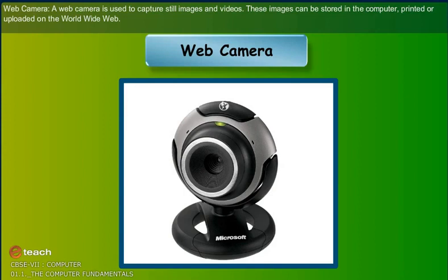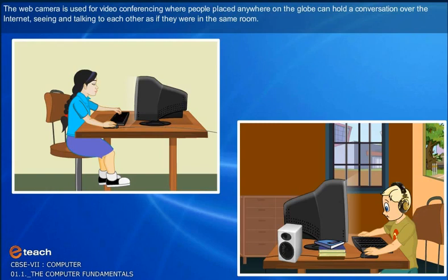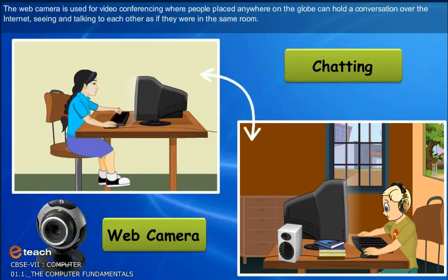Web Camera: A web camera is used to capture still images and videos. These images can be stored in the computer, printed or uploaded on the World Wide Web. The web camera is used for video conferencing where people placed anywhere on the globe can hold a conversation over the internet, seeing and talking to each other as if they were in the same room.